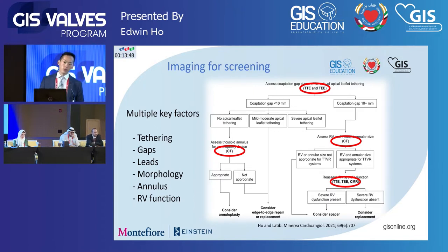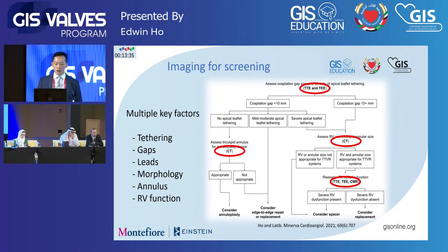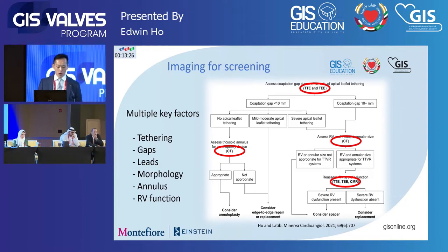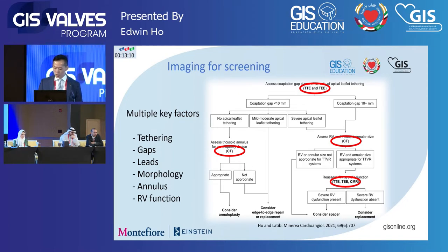Imaging is really at the forefront of what we use for screening for different types of interventions. We first ask, is the person a surgical candidate? Unfortunately, a lot of our patients with TR are pretty high risk for surgery — many have had previous surgery or are elderly with comorbidities — so we start thinking about transcatheter options. The key anatomic factors we think about are related mostly to the leaflets: tethering, gaps, presence or absence of leads and adherence, valve morphology, the annulus, and RV function.